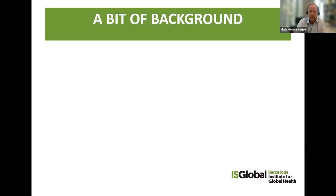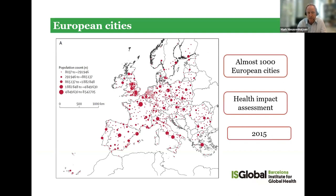The project has a bit of a history — it doesn't come out of nothing. We've been working on this already for a couple of years and I would like to present a few results from our previous studies. The main database we're working with is a database of a thousand European cities, for which we have quite a bit of data in terms of exposure data, boundaries, population data, and mortality data. We've been doing some analysis already published based around the year 2015, the first and last year for which we had all this data available. For this, we used the health impact assessment methodology, trying to estimate the mortality burden related to a number of different exposures.